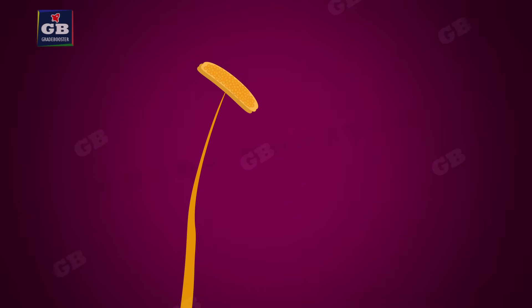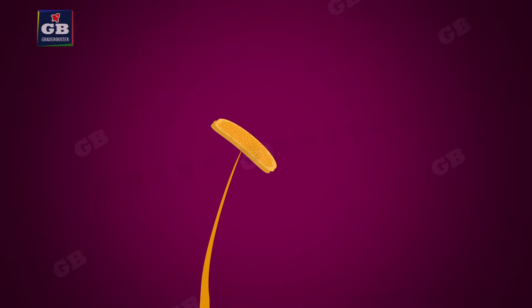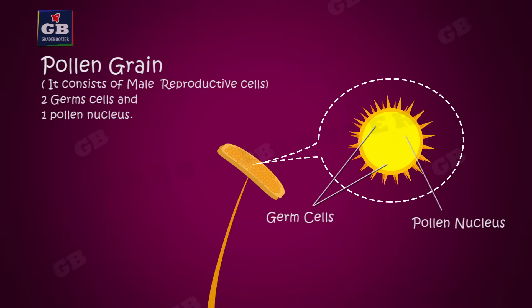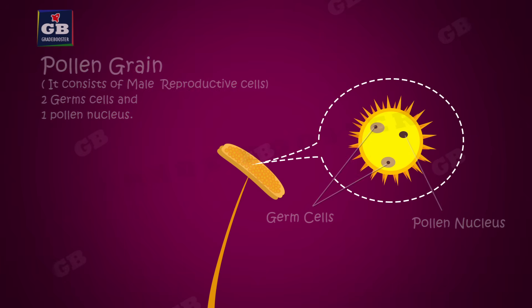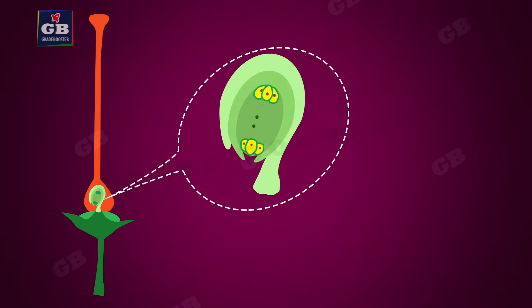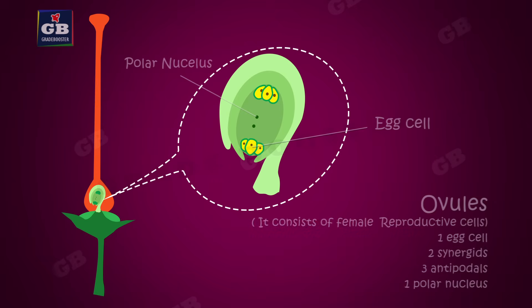What do these reproductive parts do? They produce the reproductive cells or germ cells. The anther is the part where male reproductive cells are produced — it produces pollen grains that are yellowish in color. Each pollen grain contains two germ cells and one pollen nuclei. The ovary contains ovules, and each ovule consists of a female reproductive cell or egg cell.